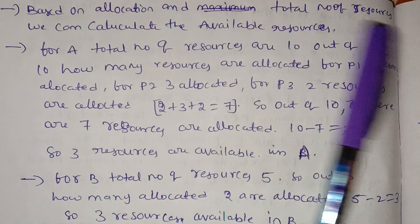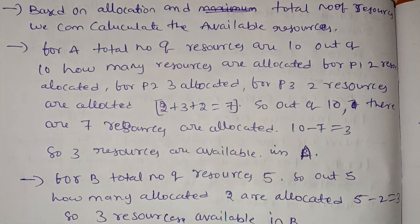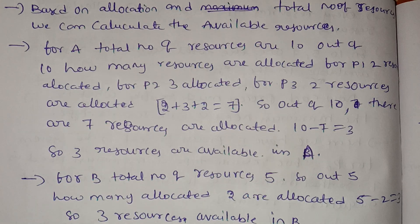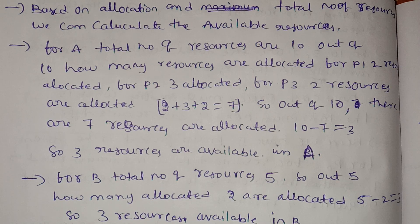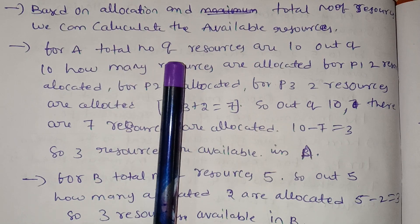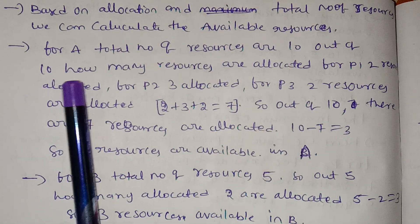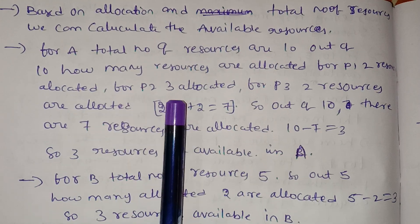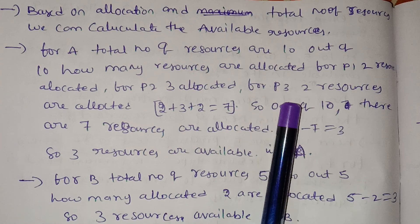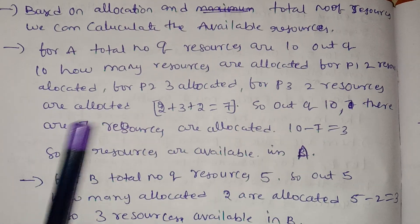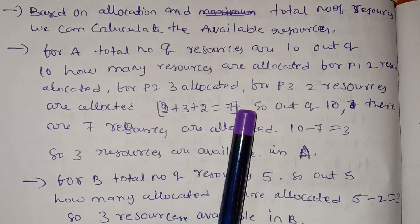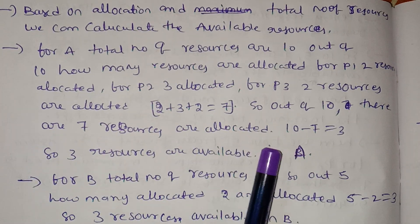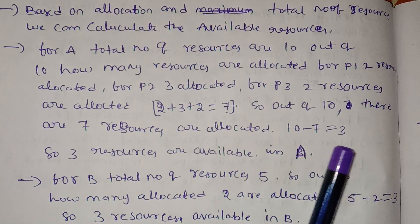Based on the allocation and total number of resources, we can calculate the available resources. For resource A, the total number of resources is 10. Out of 10: P1 has 2 allocated, P2 has 3 allocated, and P3 has 2 allocated. So 2 plus 3 plus 2 equals 7. Out of 10, there are 7 resources allocated, meaning 10 minus 7 equals 3 available resources for A.